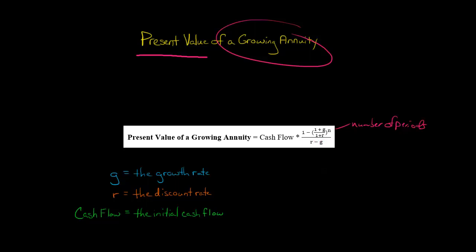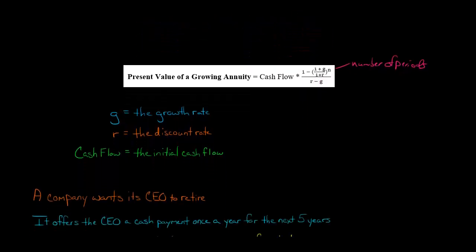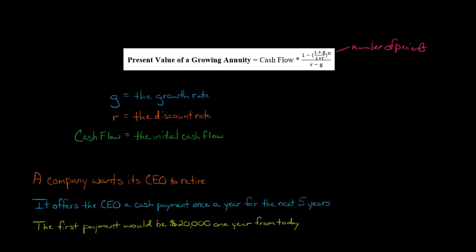Let me show you how to do this with an actual example. We'll apply the formula. So let's say we've got a company that wants its CEO to retire. And so as an incentive, they offer the CEO a cash payment once a year for the next five years.